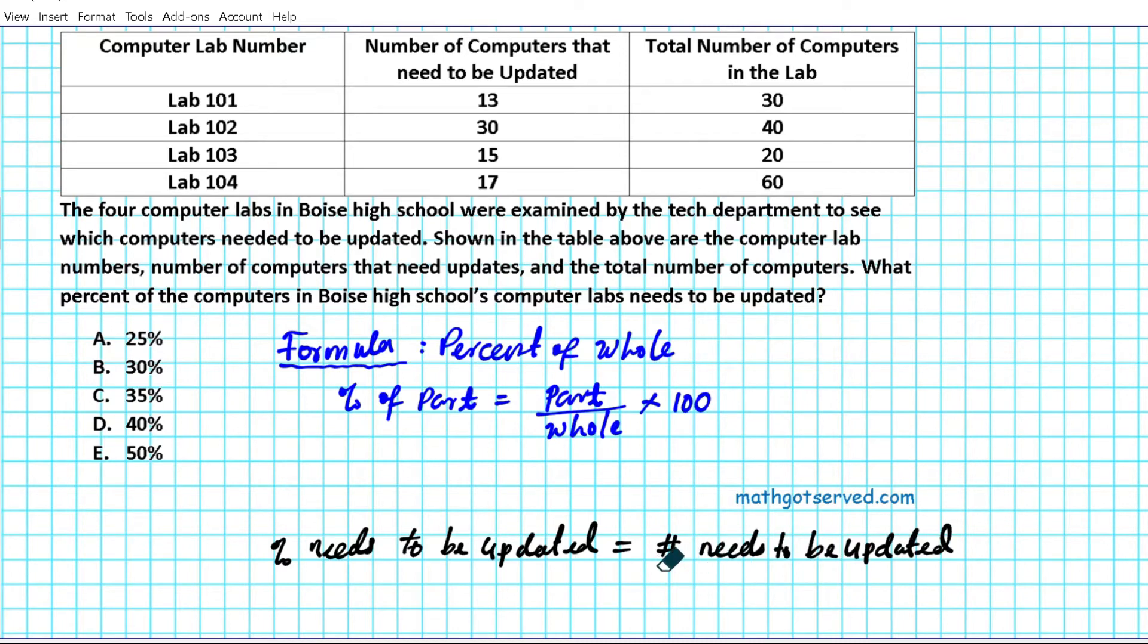This is the part, and we're going to divide it by the whole. So what is the whole in this scenario? The whole basically represents the total number of computers. So we're going to divide the number of computers that needs to be updated by the total number of computers. This would give us the fraction of computers that needs to be updated. To convert that to percent, we'll just multiply our answer by 100. Let's find the two missing pieces in this equation and then we can go ahead and solve it. We just need to find the number of computers that need to be updated and the total number of computers.